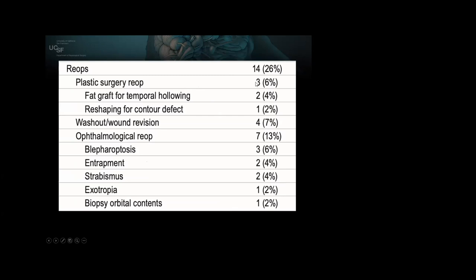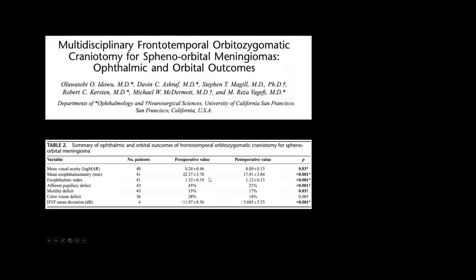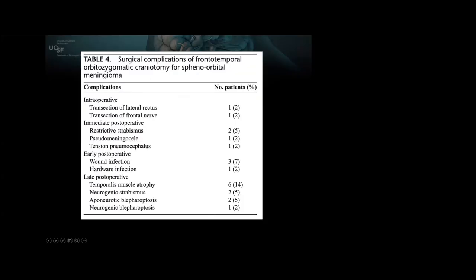Re-operations occurred in 26% of cases. Wound washouts were for the infections. Ophthalmic procedures included the two entrapment patients and others done for strabismus or exotropia. My neuro-ophthalmology colleague and oculoplastic surgeon Dr. Reza Vaghefi reported on the ophthalmic results specifically for the orbital literature, documenting improvements in proptosis index, afferent pupillary function, and mean axis of deviation.